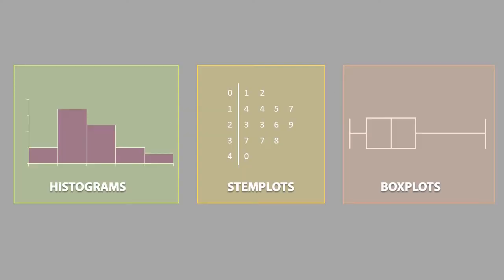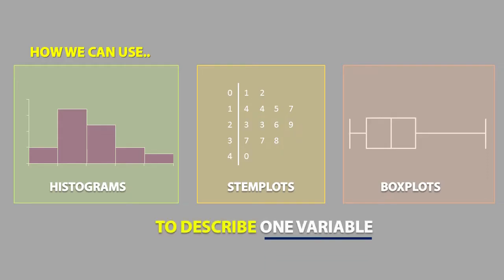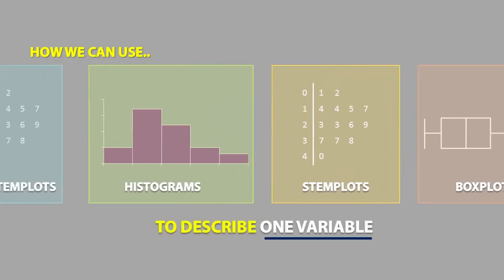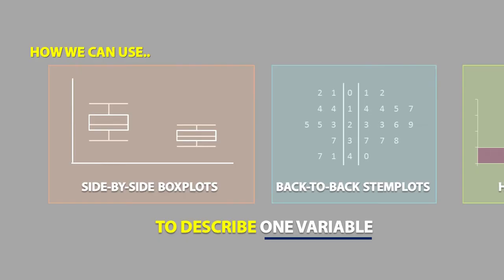In the first video set, we talked about how we can use histograms, stem plots and box plots to describe one variable and we also used back-to-back stem plots and side-by-side box plots to help us compare two different populations with respect to the same variable.